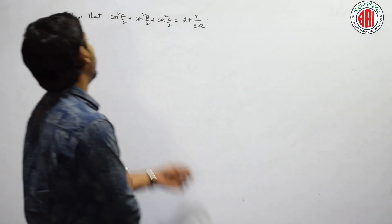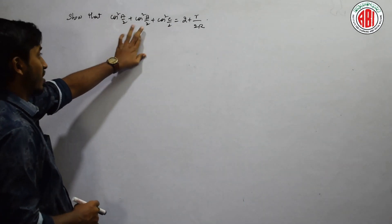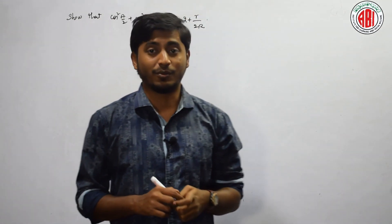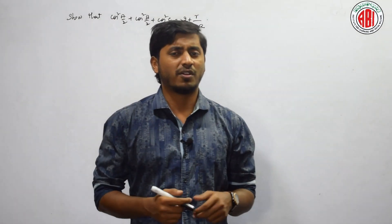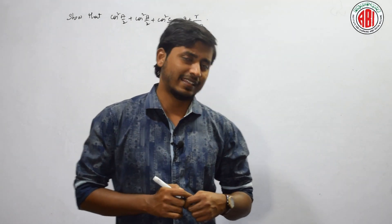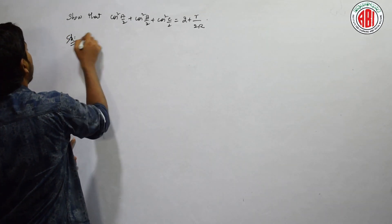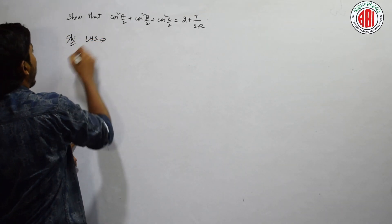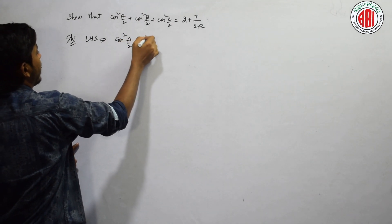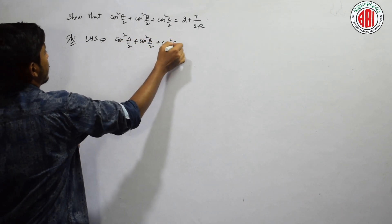The first question asks us to show that cos²(A/2) + cos²(B/2) + cos²(C/2) = 2 + r/2R. Let us take the LHS as cos²(A/2) + cos²(B/2) + cos²(C/2).